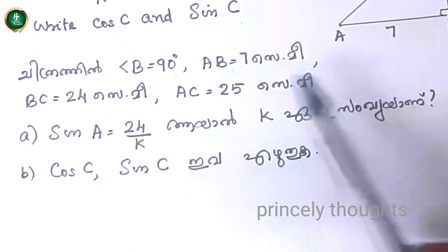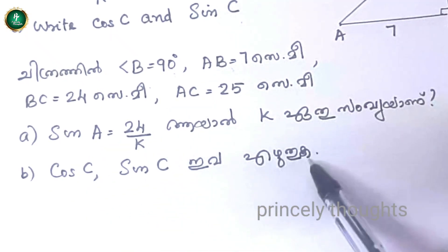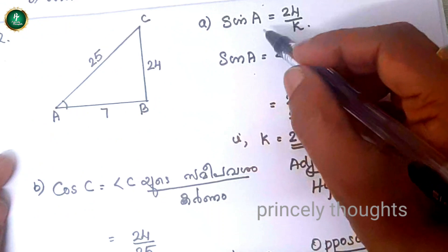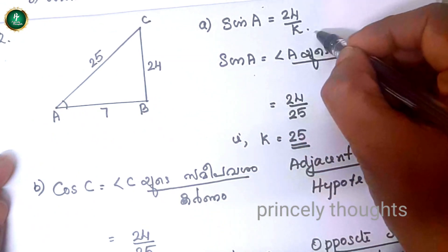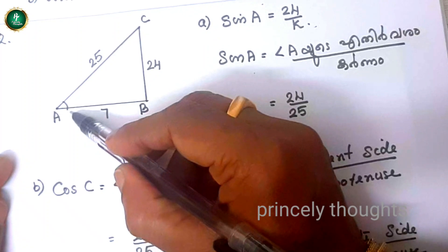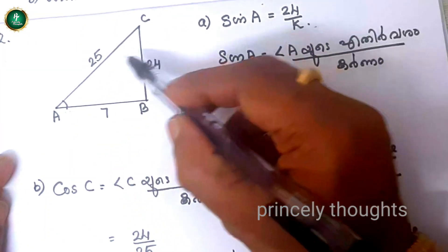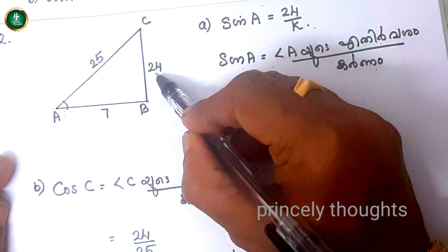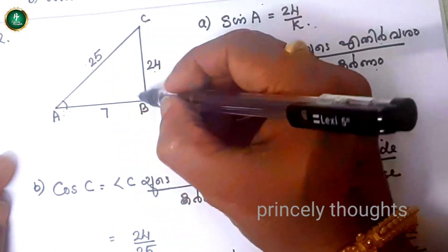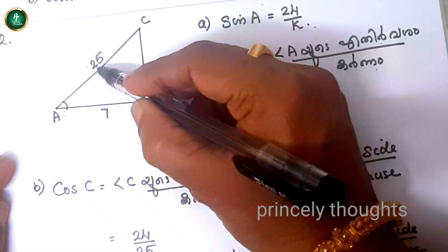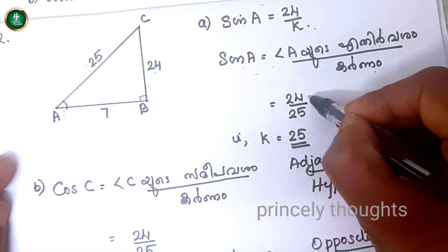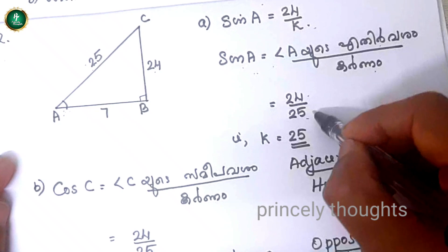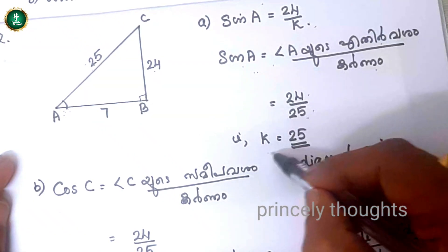Sin A equals 24 by k. The hypotenuse AC is 25 cm. Sin A equals BC over AC, that is 24 over 25. Here in the numerator, 24, and in the denominator, 25. Therefore, k is equal to 25.